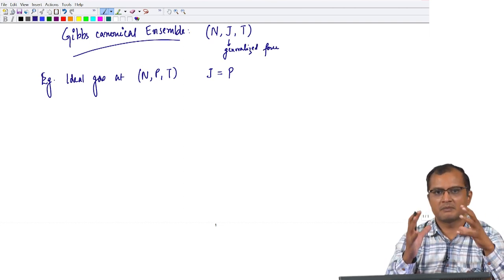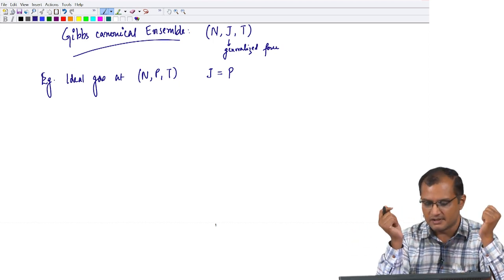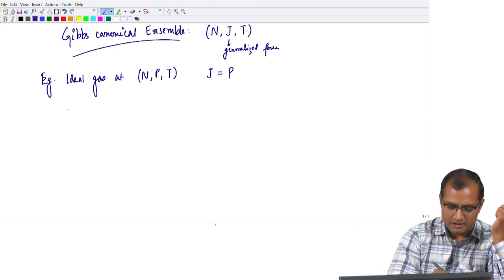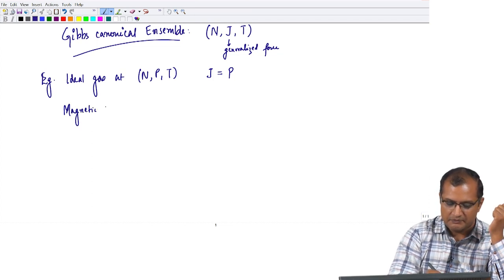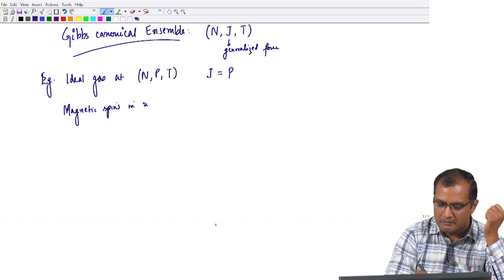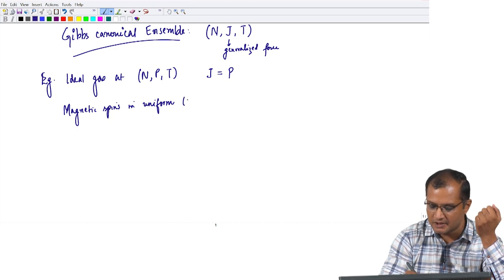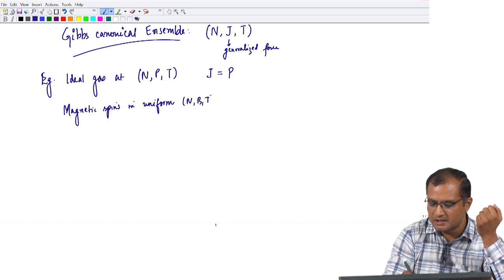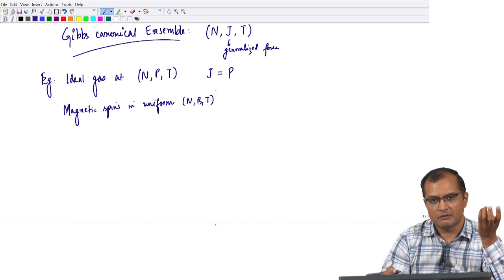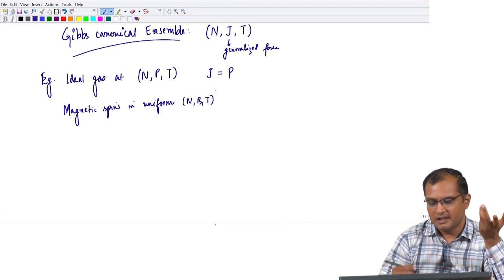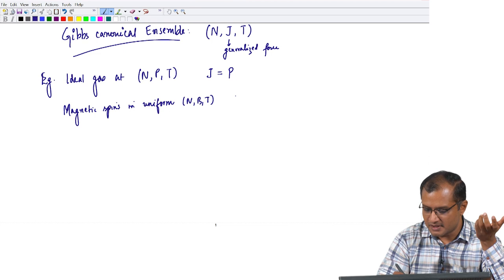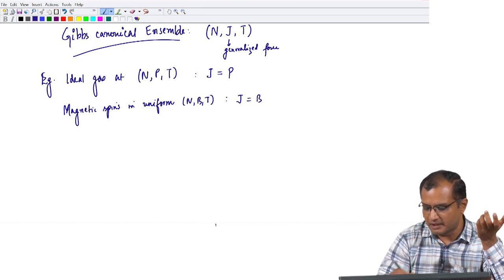The system has to do work against the generalized force in some sense. You could also take magnetic systems in some uniform magnetic field — that would be N, B, and T at some constant number of spins, magnetic field B, and temperature T. In this case I have taken the generalized force to be the magnetic field.